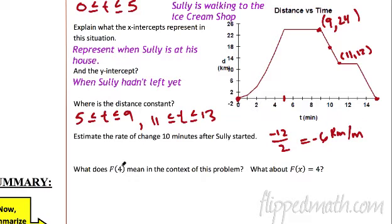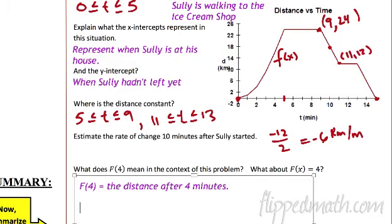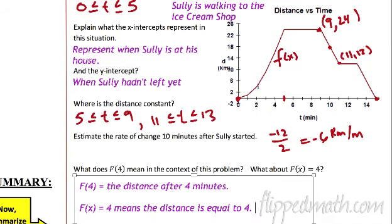What does f of four mean in the context of this problem? f of four means the value when t equals four — it's the function value at the fourth minute. So it's his distance — his distance after four minutes. f of four equals the distance after four minutes. That's in context. Now what about f of x equals four? That means that his distance equals four. So f of x equals four means the distance is equal to four. If we had to solve for x, there are two places: like here at t equals two, and then over here as well, maybe like 14. But it doesn't ask you to do that.